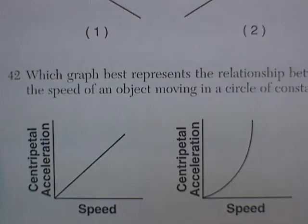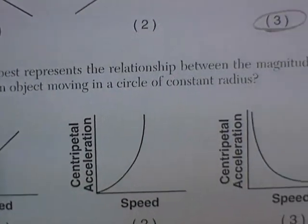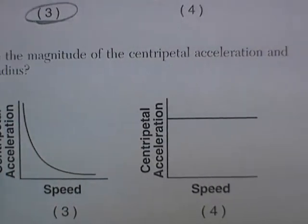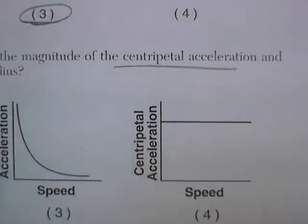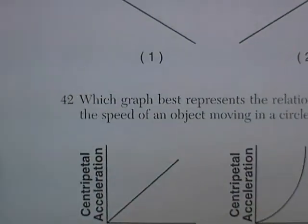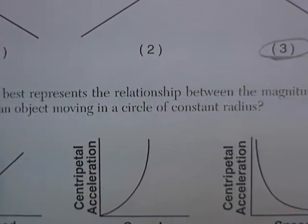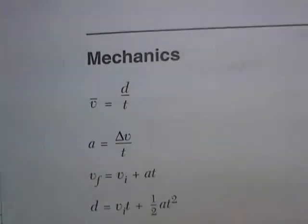Question 42. Which graph best represents the relationship between the magnitude of the centripetal acceleration and the speed of an object moving in a circle of constant radius? Let's start off with the equation.